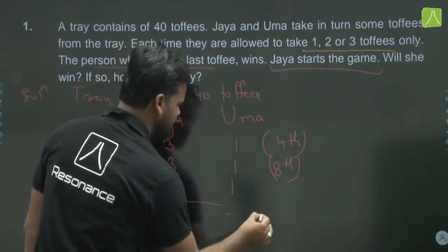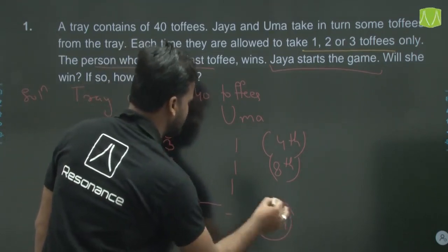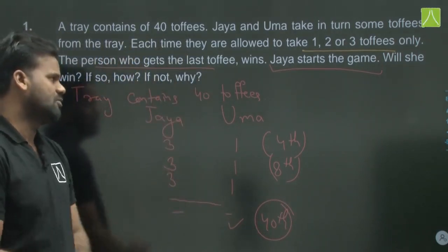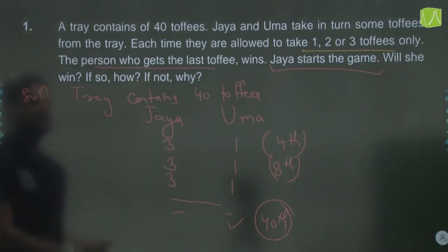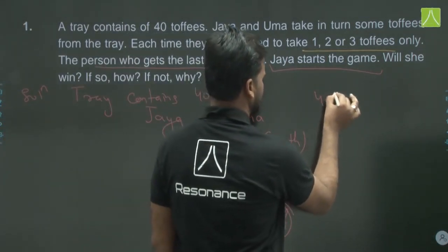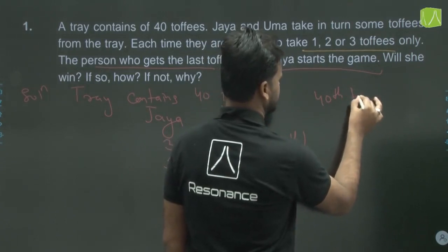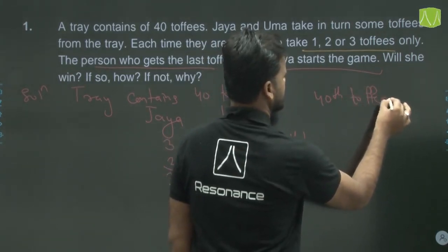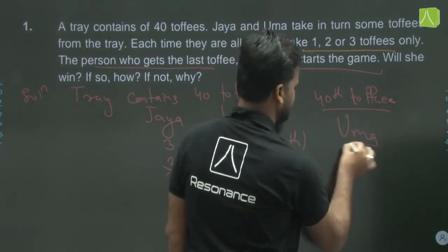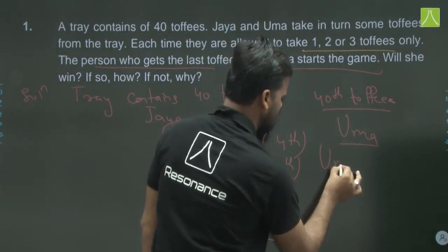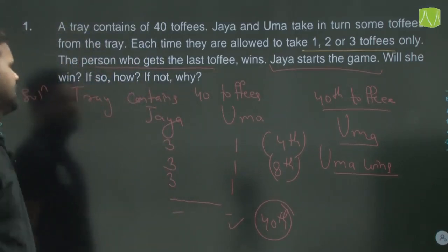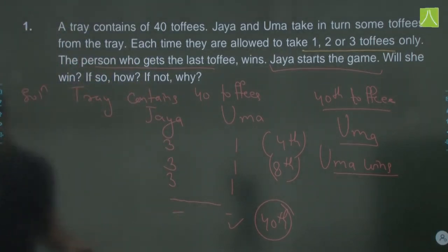Toffees at multiples of 4 will be picked by Uma. The 40th toffee is also a multiple of 4, so Uma will pick it. Therefore Uma wins. Your answer is: Uma wins. I hope this is clear to all of you.